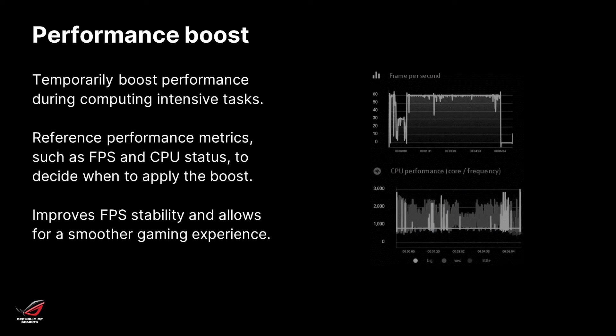Moving on to the in-game performance controls. We'll start off with Performance Boost, which lets you temporarily boost the performance of the phone during computing-intensive tasks like massive model rendering, for instance. What's cool is that you can even reference performance metrics like FPS and CPU status and let the SDK decide when to apply the boost, helping to identify problematic areas where things get really tense for the system. This can help improve FPS stability, which is crucial for a smooth gaming experience.